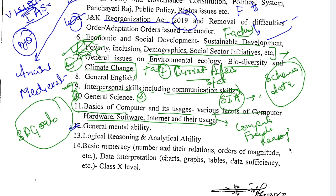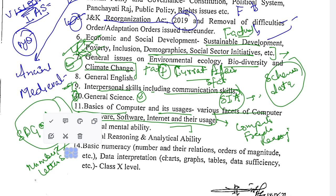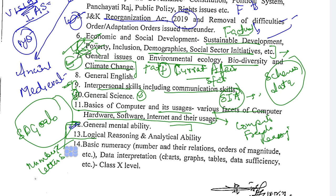Then your general mental ability, logical reasoning, and analytical ability. This covers basic general mental ability questions and logical reasoning — number series, letter series, coding and decoding, blood relations, and statement and conclusions. That is what we have studied here in this section.